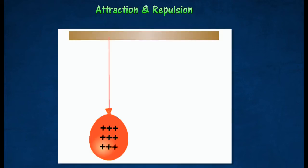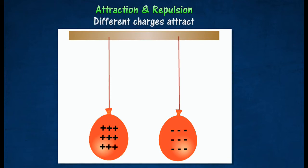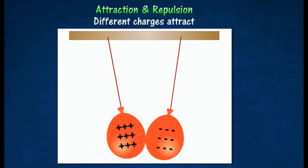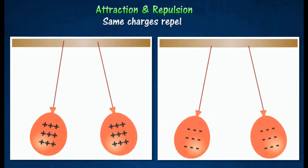When two electrically charged bodies are brought together, they exert a force on each other. Electrically charged objects may attract or repel each other, or attract small uncharged objects placed near them. Different charges will attract one another. Same charges repel one another.